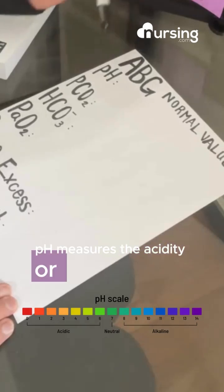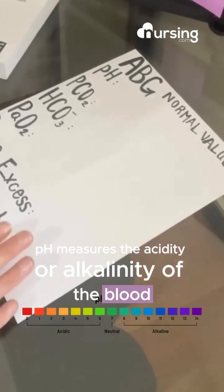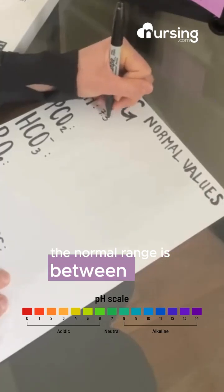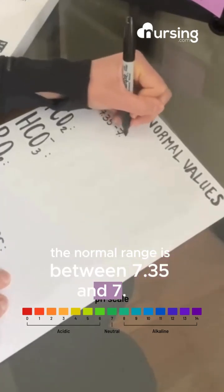pH measures the acidity or alkalinity of the blood. The normal range is between 7.35 and 7.45.